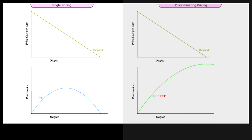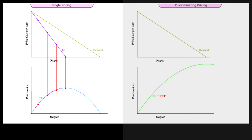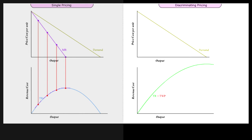From the single seller's TR curve, we can derive the marginal revenue MRSP at any output level from the slope of TR. From the discriminating price seller's TR curve TWP, we can derive the marginal revenue MRDP at any output level from the slope of TWP.